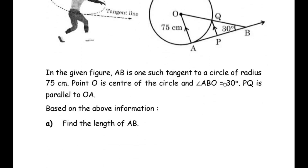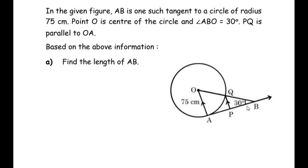Let me take this diagram for easy reference. If we look at the figure given, OAB is a triangle and it is a right angled triangle, right angled at point A. It is right angled because we are going to make use of the radius-tangent theorem, which states that the radius always makes a 90 degree angle with the tangent at the point of intersection. OA is a radius and AB is a tangent, and point A is the point of intersection. So using the radius-tangent theorem, angle A becomes 90 degrees, making OAB a right angled triangle.